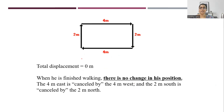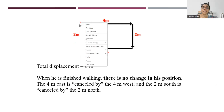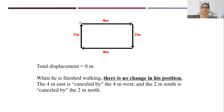What about displacement? Displacement is the shortest distance connecting the initial and final point. Since he has returned back to the same position, there is no gap between the initial and final point. Hence displacement is 0. The +4 cancels with -4, and +2 cancels with -2, so the net effect is 0.